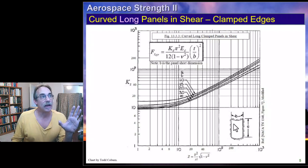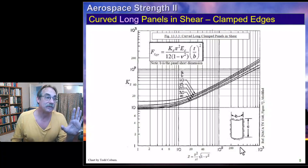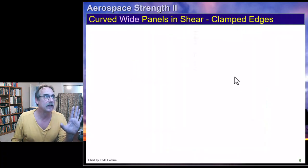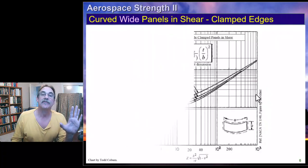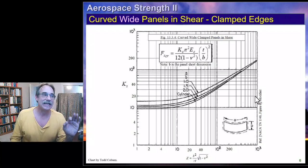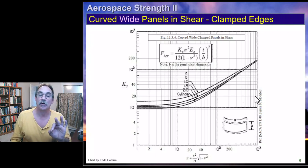This is a curved long panel in shear with clamped edges. This is identical to two curves ago but now with clamped edges. Calculate Z, go to A over B, calculate K sub S, plug into the same exact formula. And for wide panels where that long dimension is curved, we come here: Z, A over B, K sub S, plug and chug, and write the margin of safety if it's the only load.